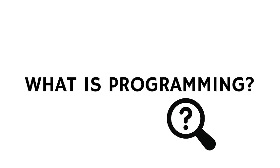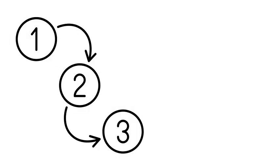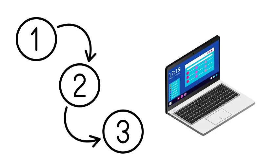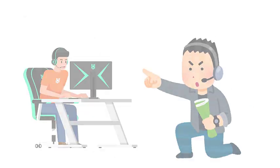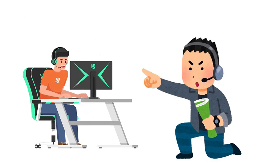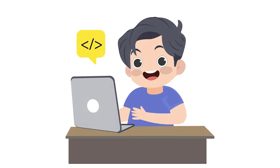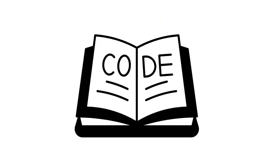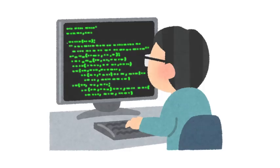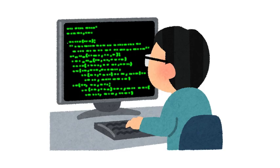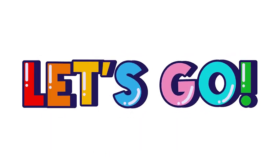What is programming? Programming is like giving instructions to a computer. Just like when you tell your friend how to play a game, you can tell a computer what to do by using special instructions. These instructions are called code. Ready to learn some cool things you can do with code? Let's go!